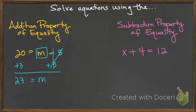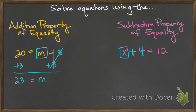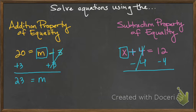The same applies to the one on the right. If I want to get x by itself but there's this plus 4, I'm going to move that plus 4 to the other side by doing the inverse — the opposite operation. The inverse of adding 4 is to subtract 4. So I'm going to subtract 4 from both sides in order to solve. The reason I was able to do that is the subtraction property of equality, which allows me to subtract the same number on both sides of the equal sign.